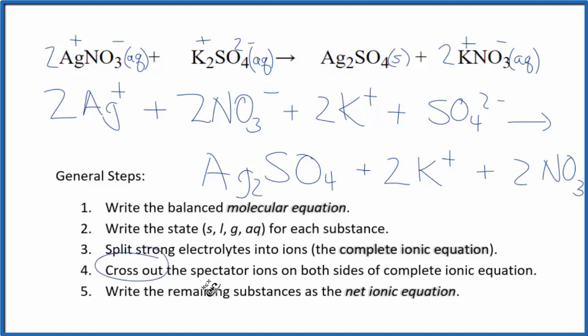Now we can cross out spectator ions. They're on both sides of the complete ionic equation. In effect, they really haven't changed. So we're not interested in them. I can see here in the reactants two nitrate ions. And two in the product. Let's just cross those out. Two potassium ions. And in the products, we have two potassium ions. Cross them out.